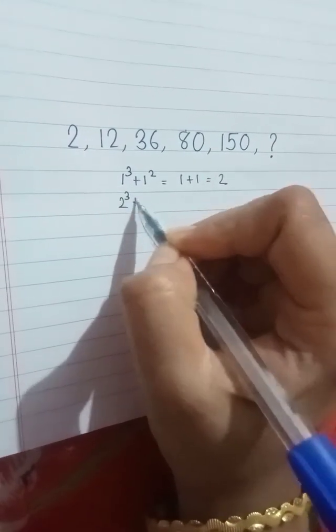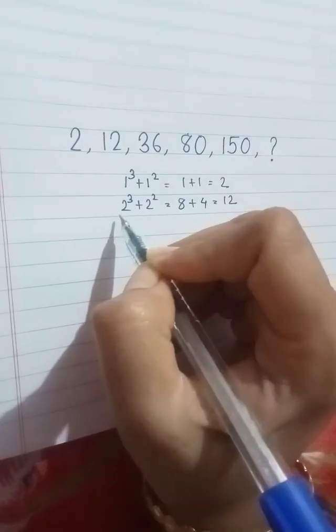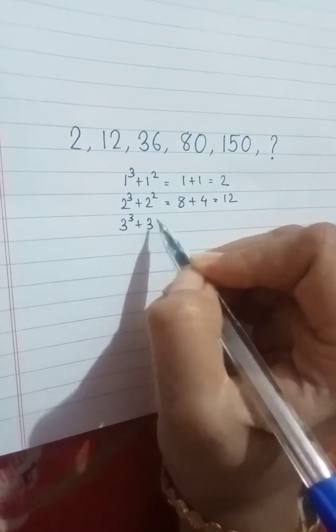Similarly, 2 cube plus 2 square. We get 8 plus 4 that is 12. 3 cube plus 3 square.